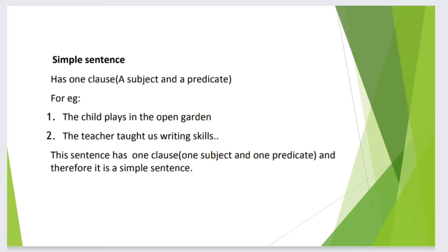A simple sentence has one clause, a subject and a predicate. For example, first: the child plays in the open garden. Second: the teacher taught us writing skills. This sentence has one clause, one subject and one predicate, and therefore it is a simple sentence.